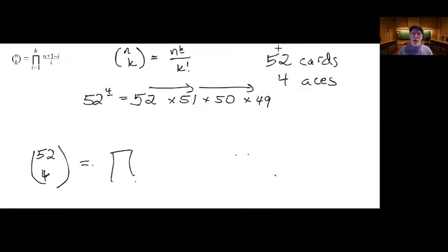And from i equals one to four, because we really only want four terms. And that's going to equal, it's going to be a ratio of up here. We need the first four terms of this 52 times 51 times 50 times 49.